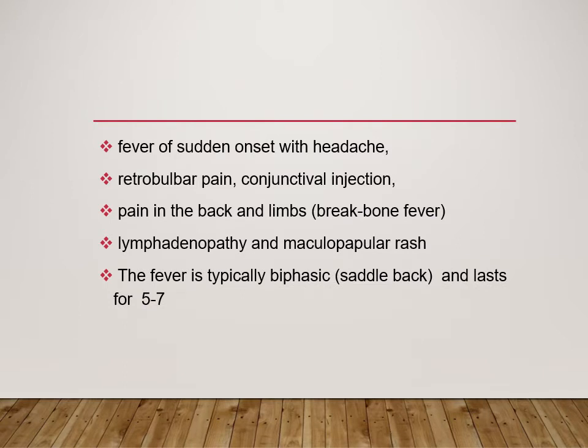The fever is typically biphasic. As described in the pathogenesis, there is primary viremia and then secondary viremia. When the virus first enters the blood there is a fever; it then goes to the reticuloendothelial system and returns to the blood as secondary viremia, causing a second fever peak. So there is a period of fever, it subsides, and then fever returns — at which point complications can occur, so it is very important to monitor this.